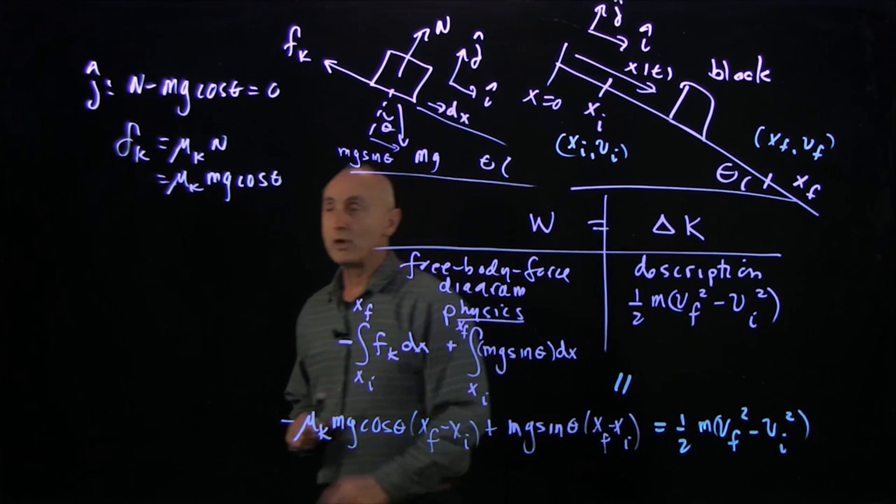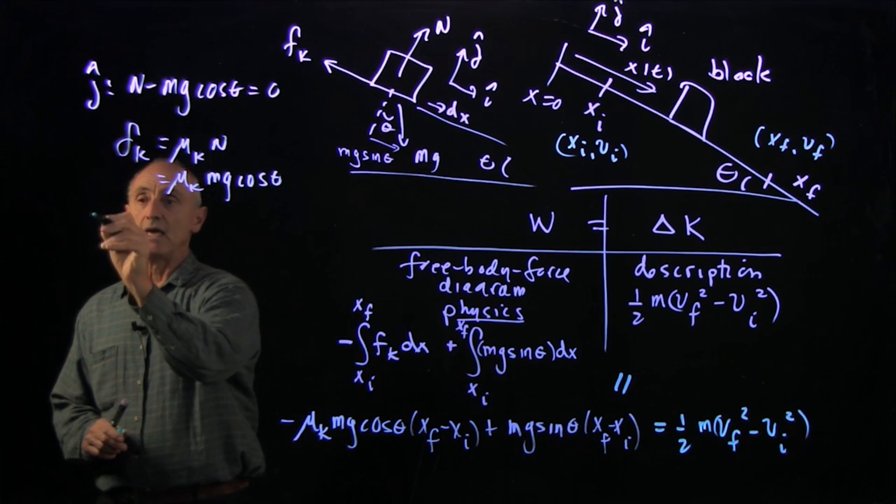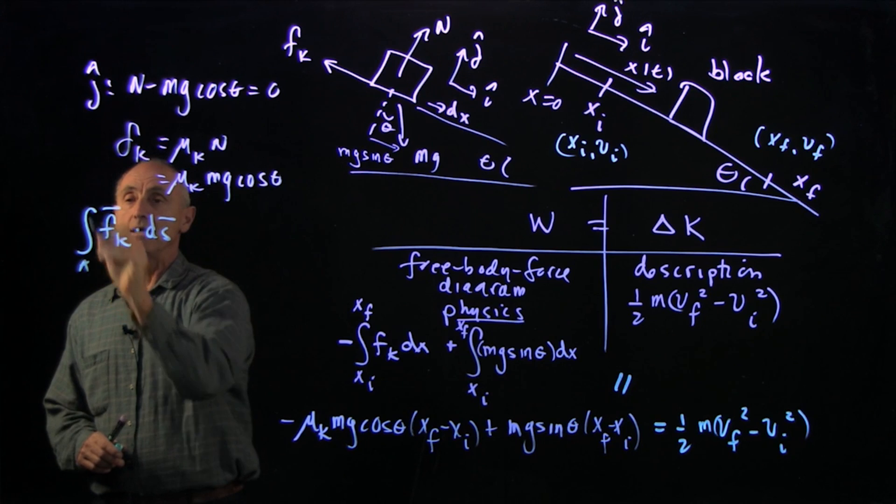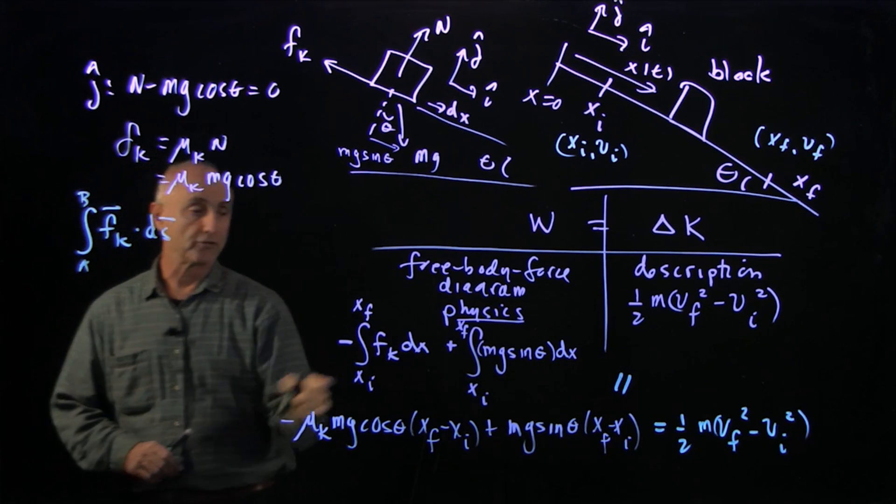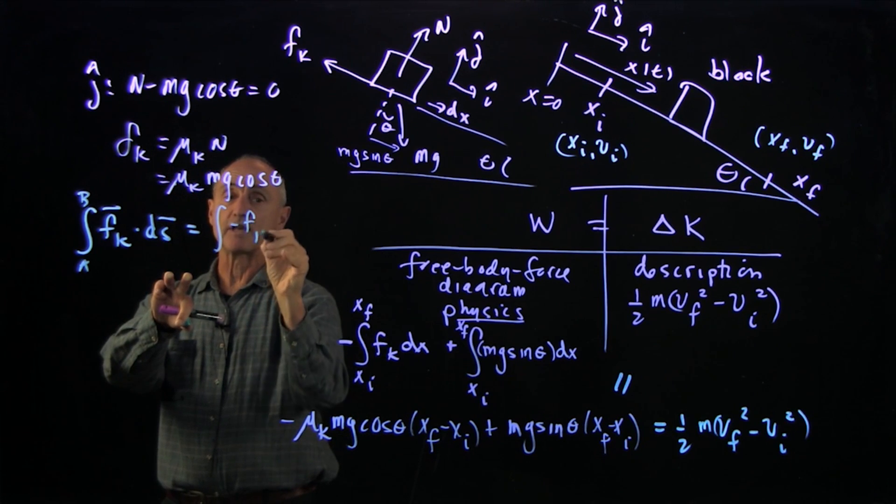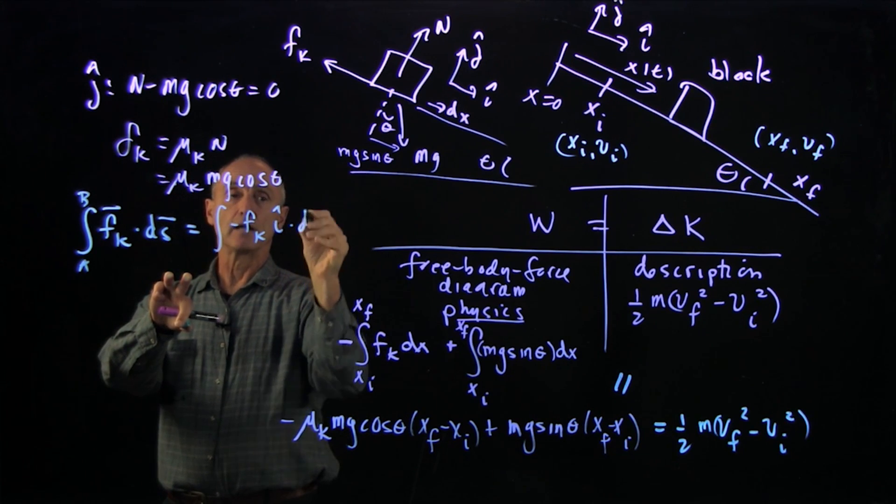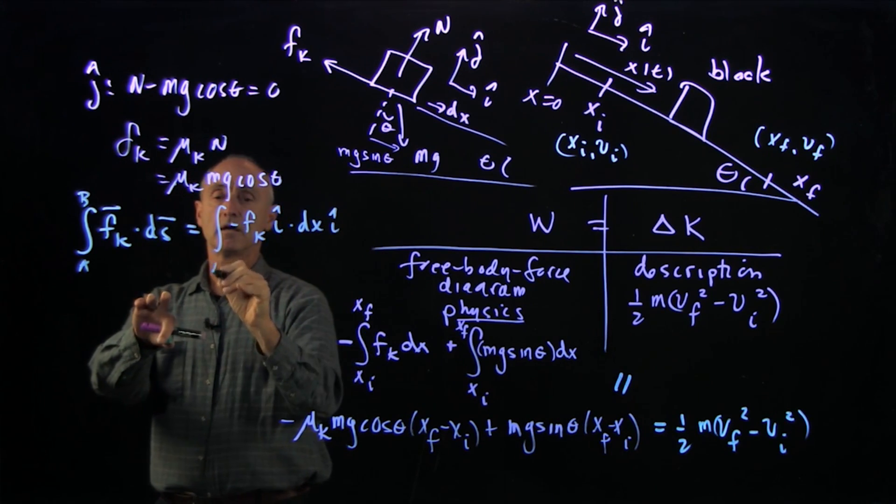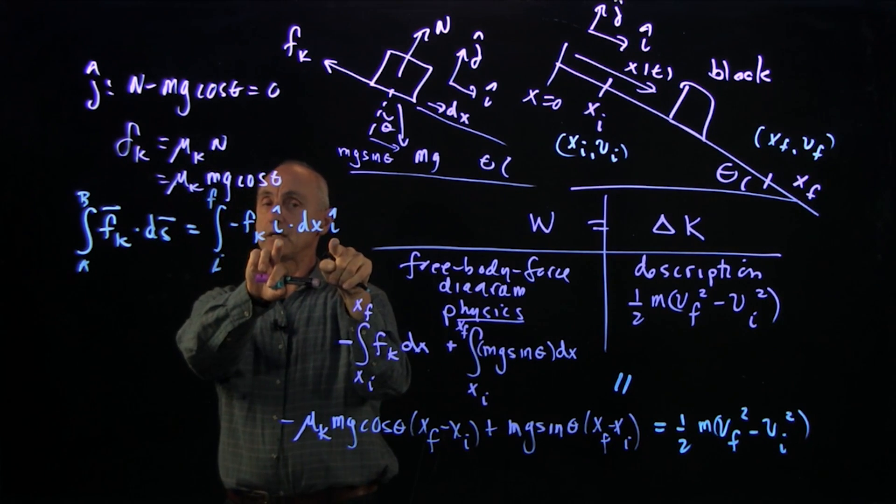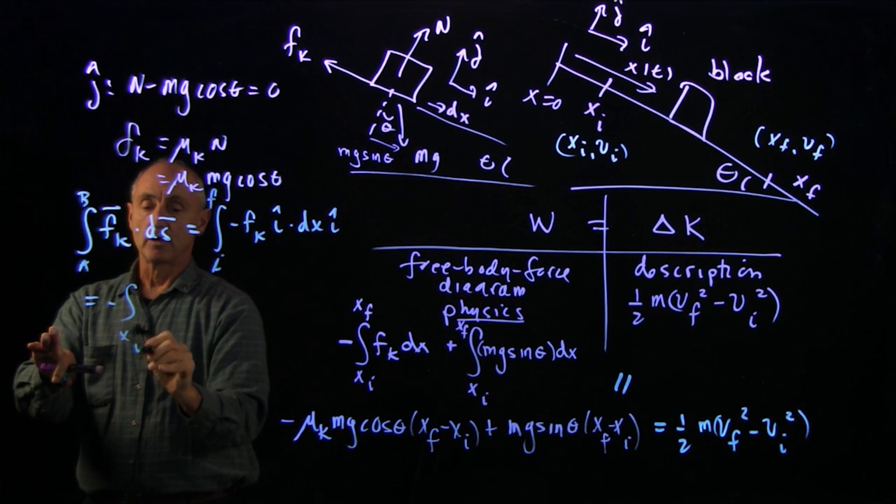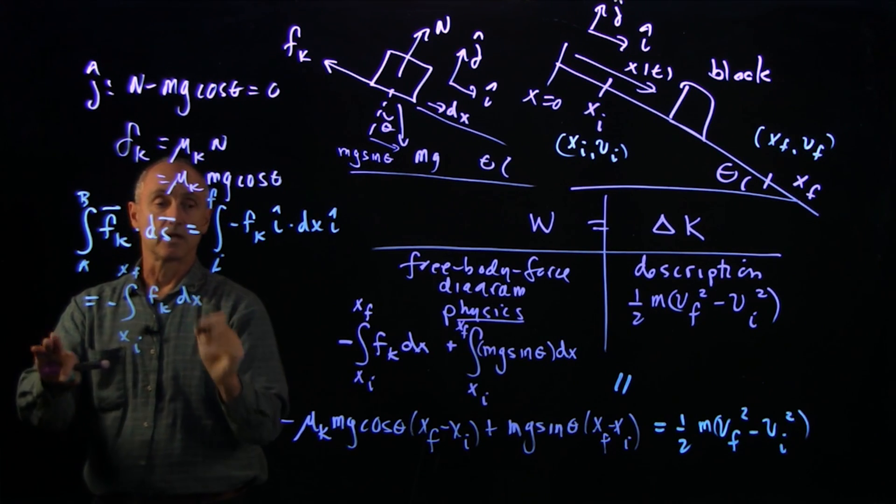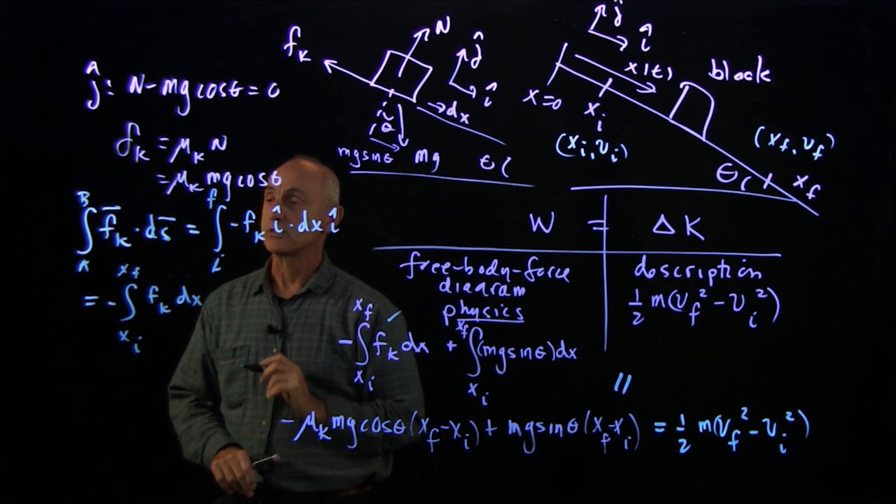One thing I do want to point out when we do this example is we've described work as a dot product from a to b. Take the friction force. In this instance, if we wrote this out explicitly, it would be minus fk i hat dot dx i hat from the initial to the final. i hat dot i hat is 1. And so you see we recover from x initial to x final of fk dx. And that was the first piece.